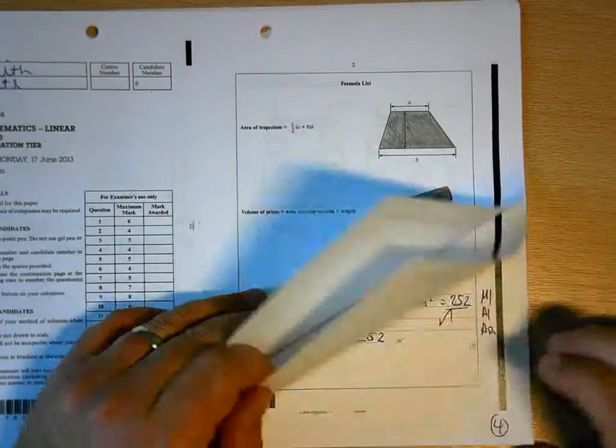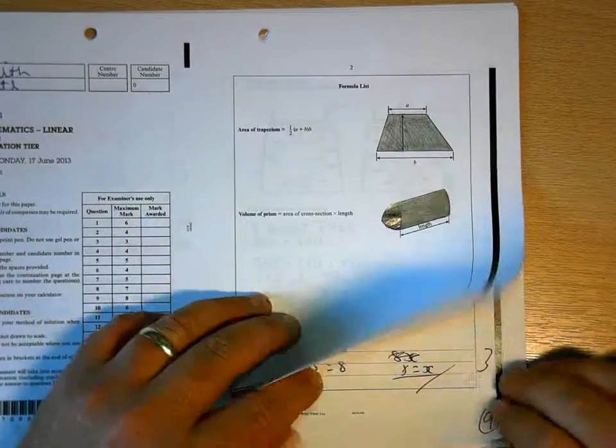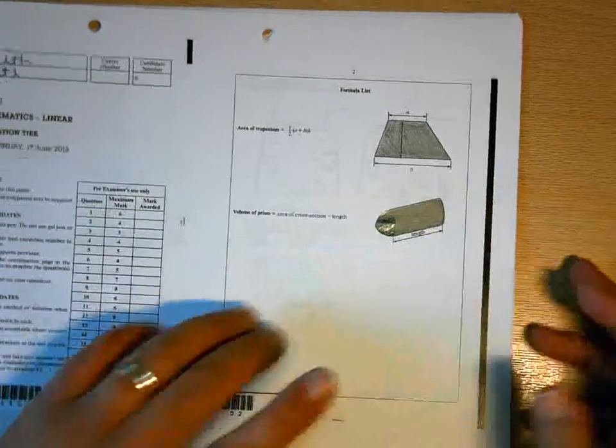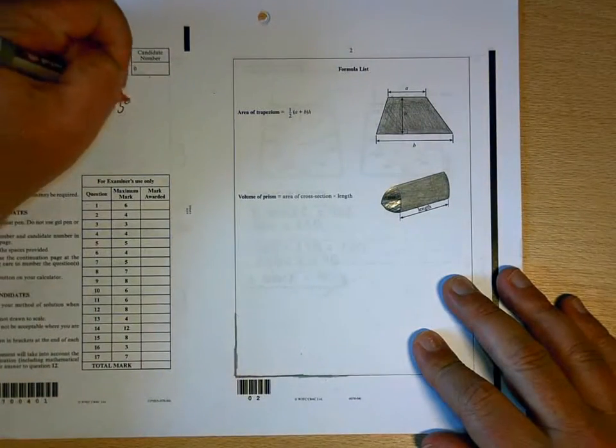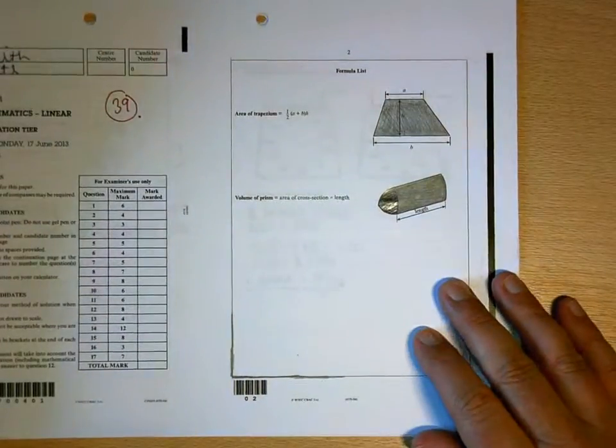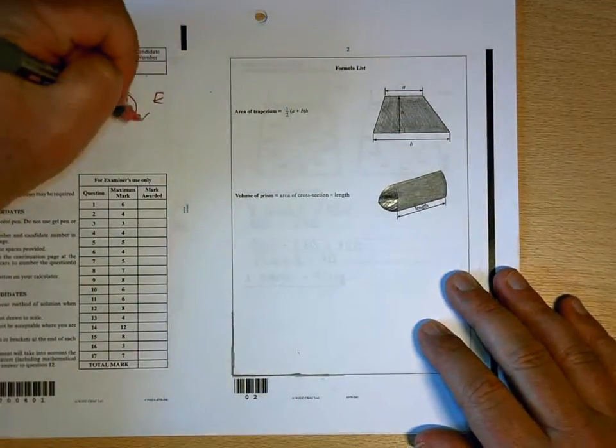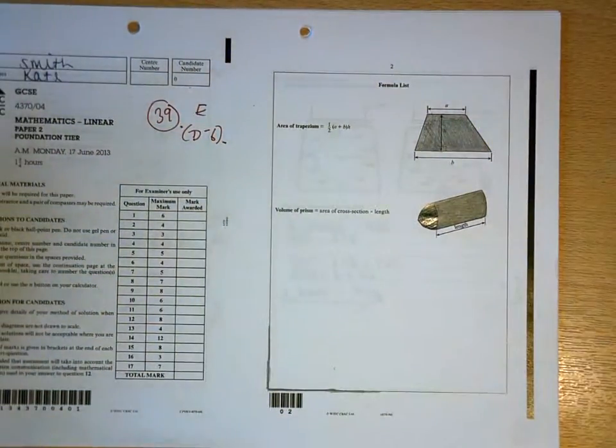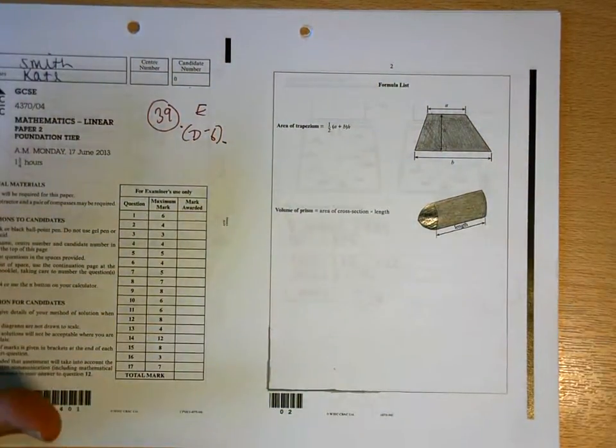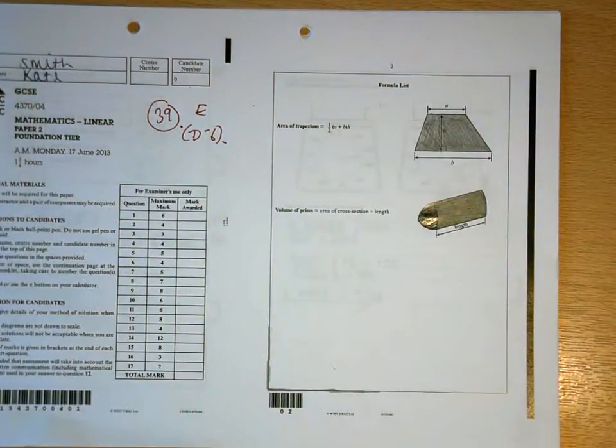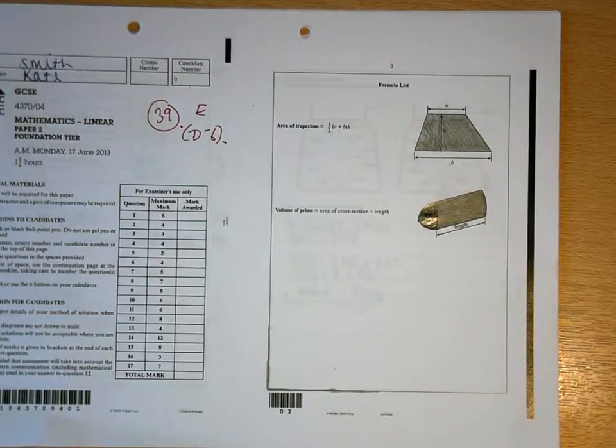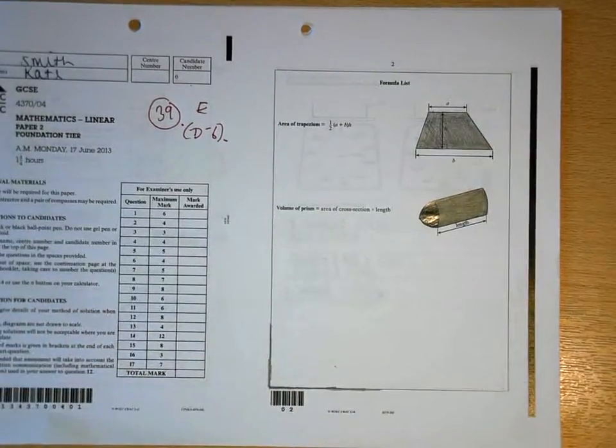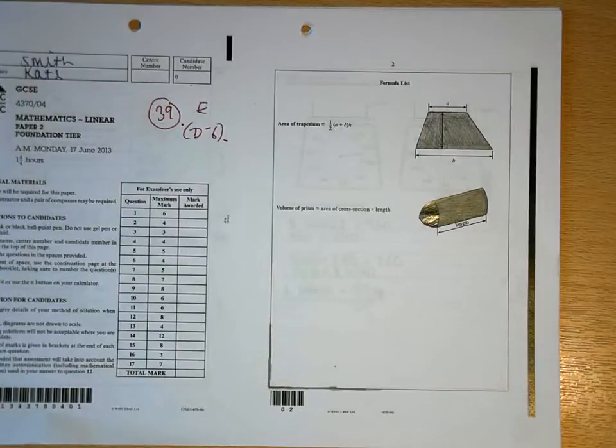So a promising start but a disappointing end. 10, 14, 18, 27, 35, 39. 39 is an E, it's six marks off a grade D. And like I said, quite clear in the last third of that paper you didn't have enough time to complete it. So if you are going to show an improvement in these questions and these papers, you need to be allowing yourself more time to do the homework.